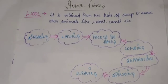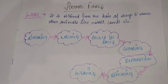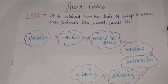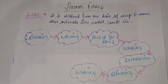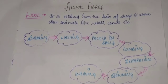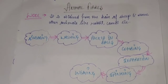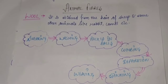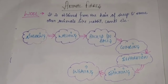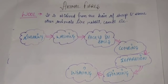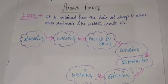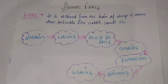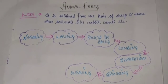Good morning students. In this video we are going to do the last part of the chapter Fiber to Fabric, and that is animal fibers. In the previous videos we have done all the types of plant fibers which are obtained either from the fruit, from the stem, or from the leaves of the plants.